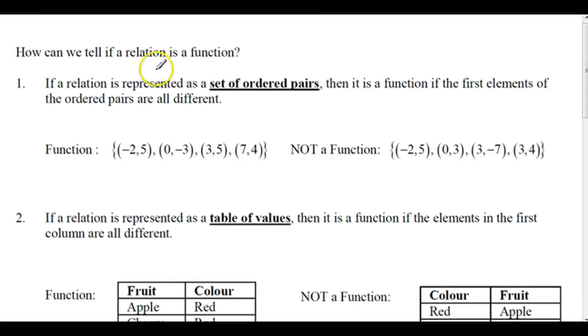How can we tell if a relation is a function? Well, if it's represented as a set of ordered pairs, then it's a function if the first elements of the ordered pairs are all different. So in this one, if you notice, we have -2, 0, 3, and 7.